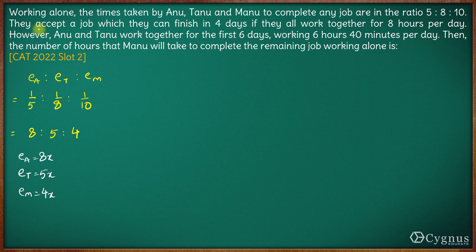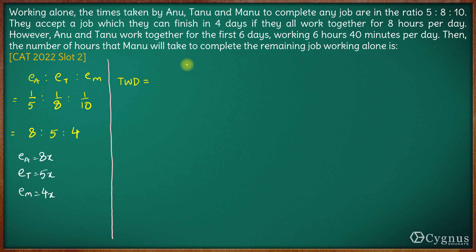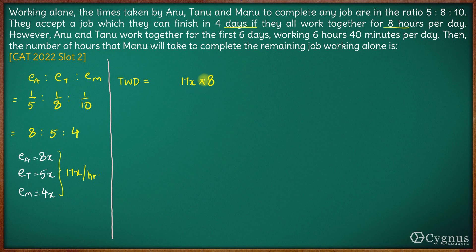In the next part of the question, they accept a job which they can finish in 4 days, working together for 8 hours per day. Their combined efficiency is 17x per hour. So the total work done in 4 days, working 8 hours per day, will be 17x × 8 × 4. This is the total work to be done.